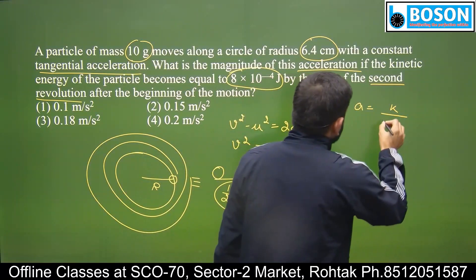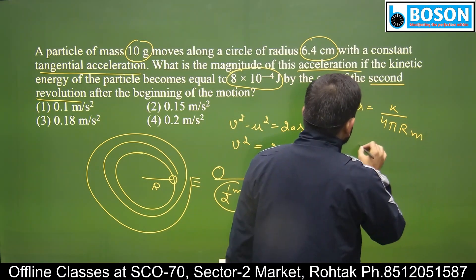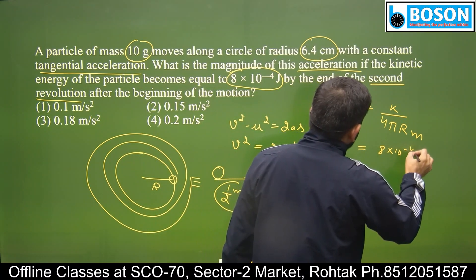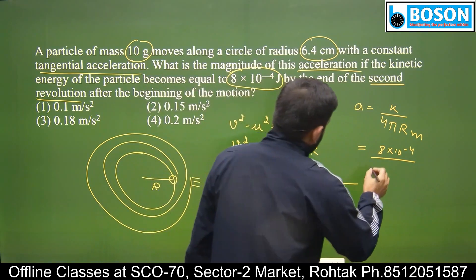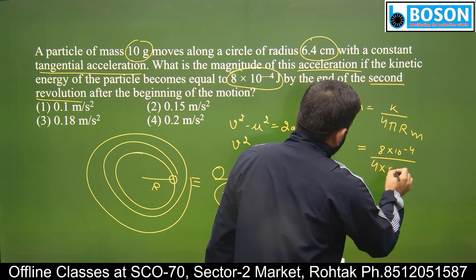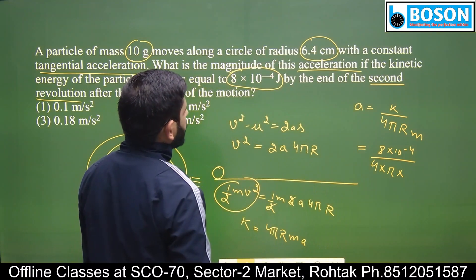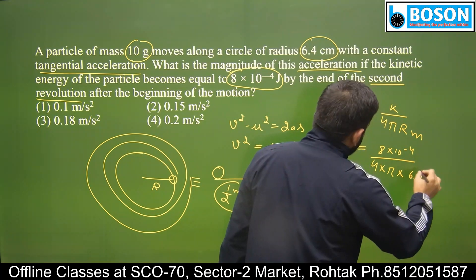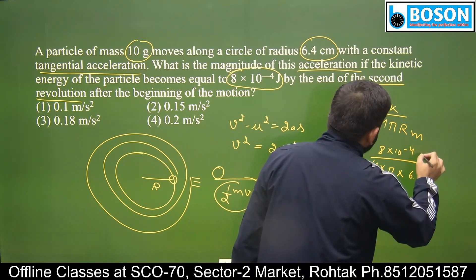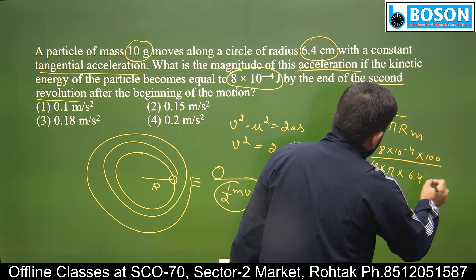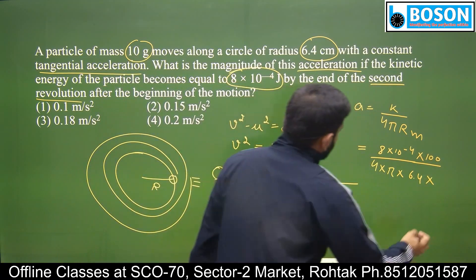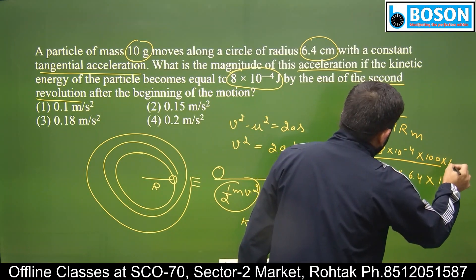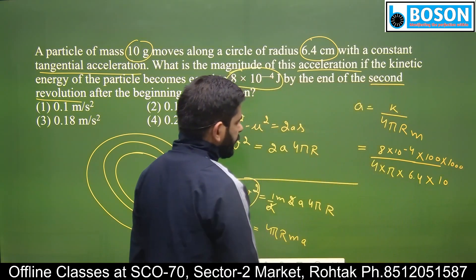और यह आपका 2 से 2 कटेगा। 4πr · m · a, या a will be equal to kinetic energy upon 4πrm. Kinetic energy is 8 × 10⁻⁴. 4 into π, r यहां पर है 6.4 cm। 6.4 cm को metres में convert करेंगे तो नीचे 100 आएगा। And into mass — mass है 10 gram, 10 gram को kg में convert करेंगे तो नीचे 1000 आएगा।